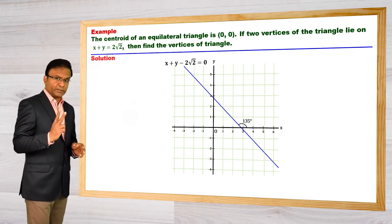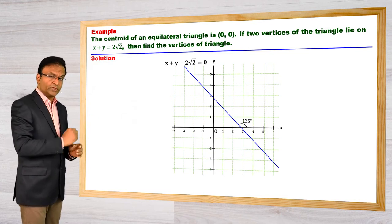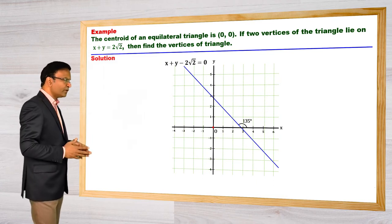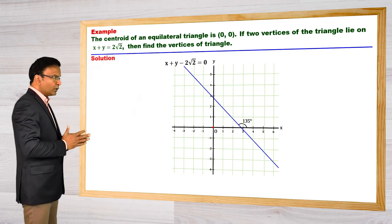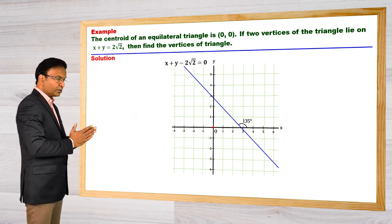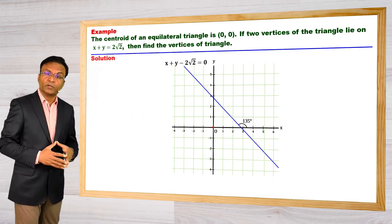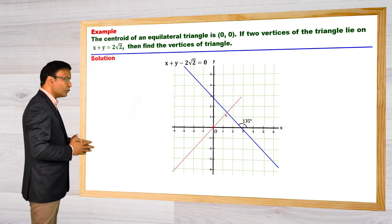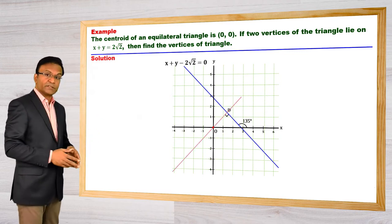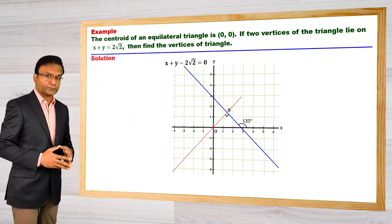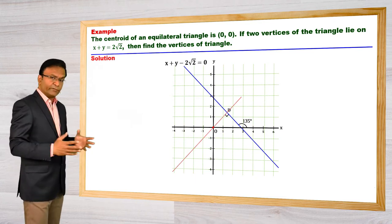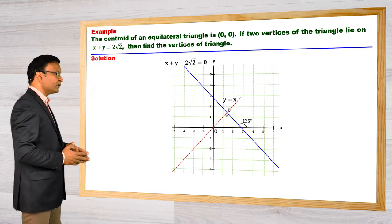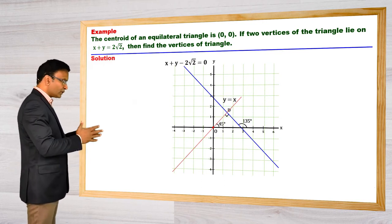Two vertices of the triangle lie on this straight line. The origin is the centroid, which means one median is perpendicular to this given line. So we draw a line perpendicular to this given line through the origin, which is the median of this equilateral triangle. The equation of this line is y = x, because the slope is 1, meaning this line makes an angle of 45 degrees with the x-axis.